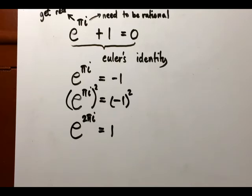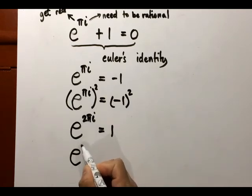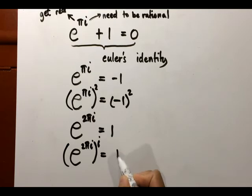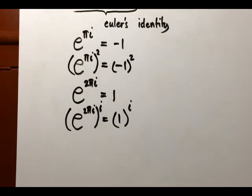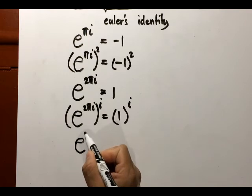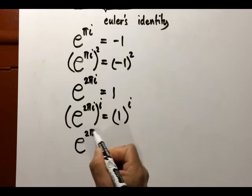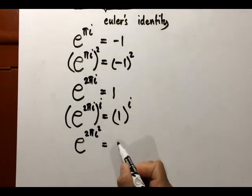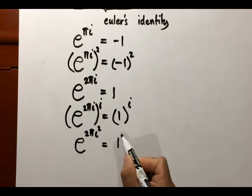Now, what if I will raise again to another power this equation, both sides? So e to the power 2πi to the power i, also the right side of the equation i. What will I get is that this is e to the power 2πi squared, and at the right, one to the power i.